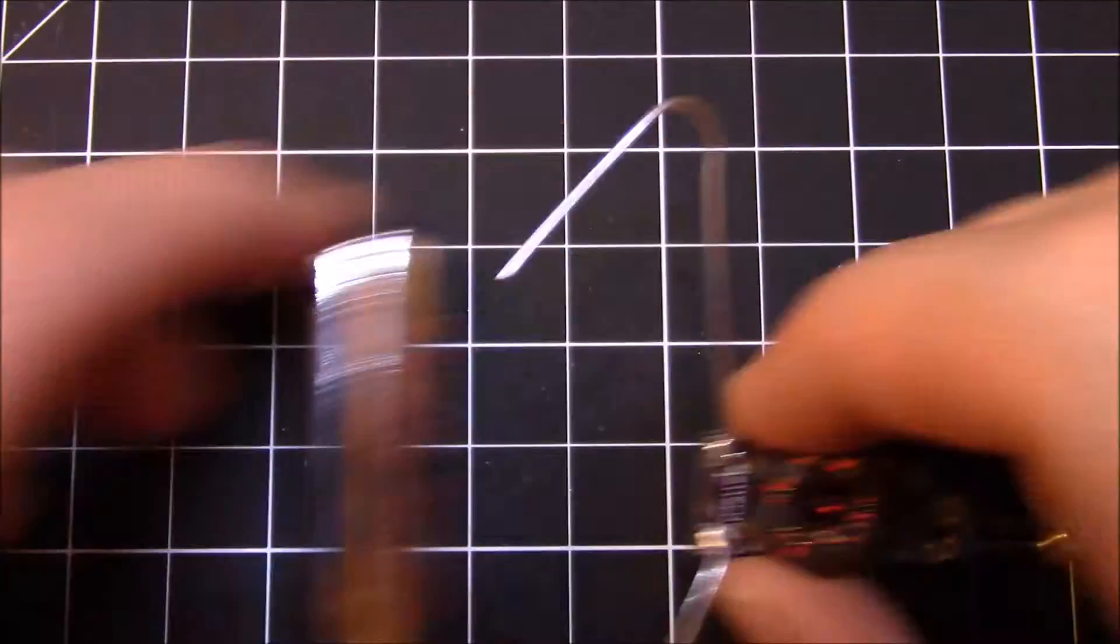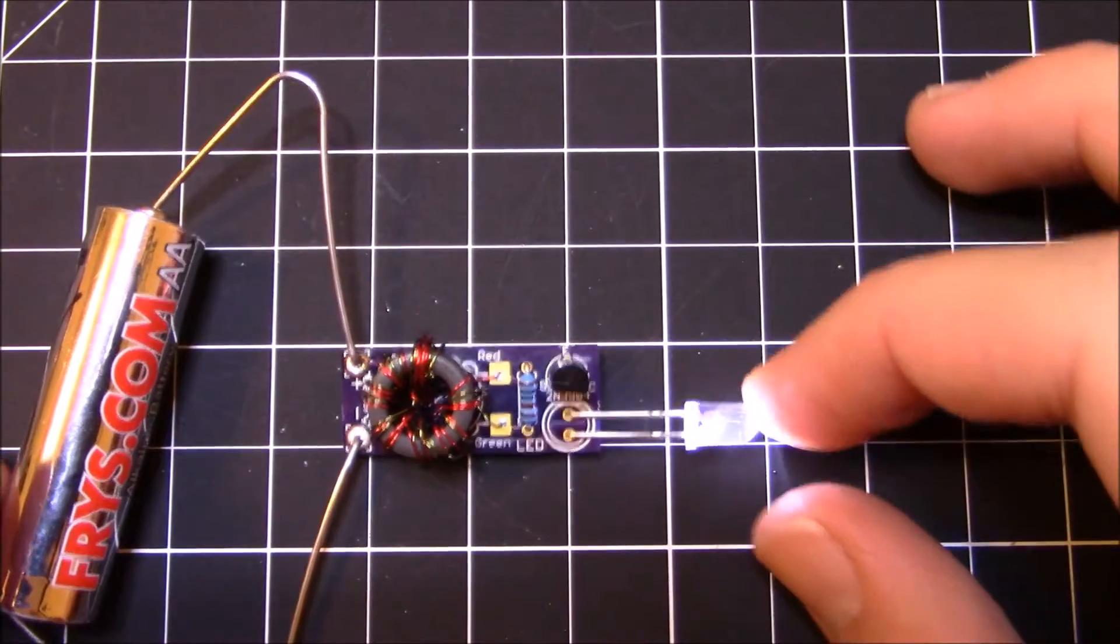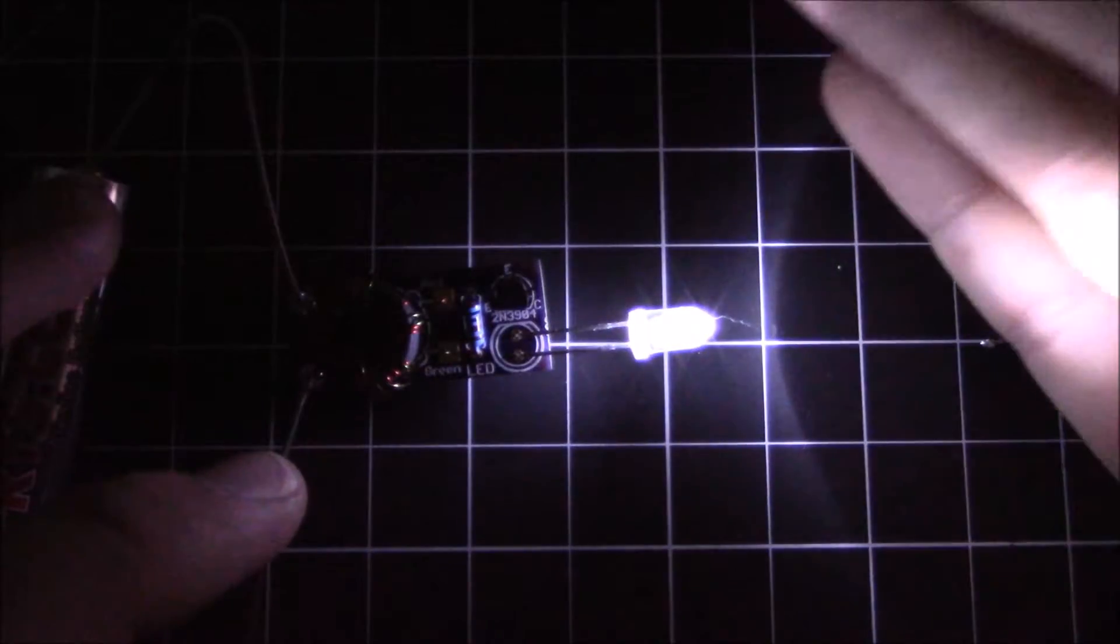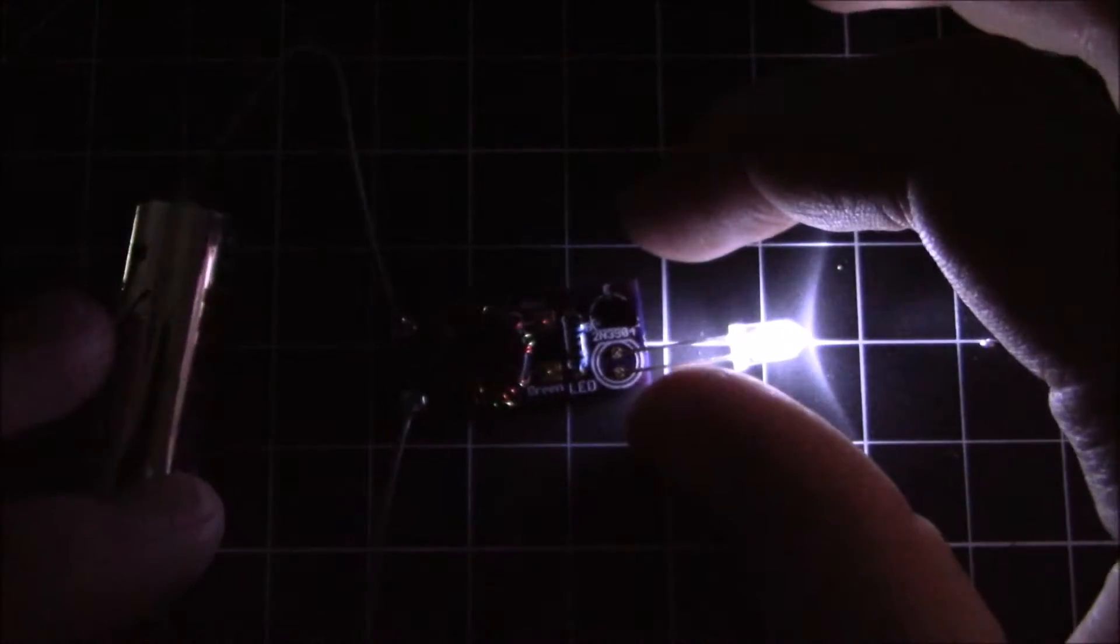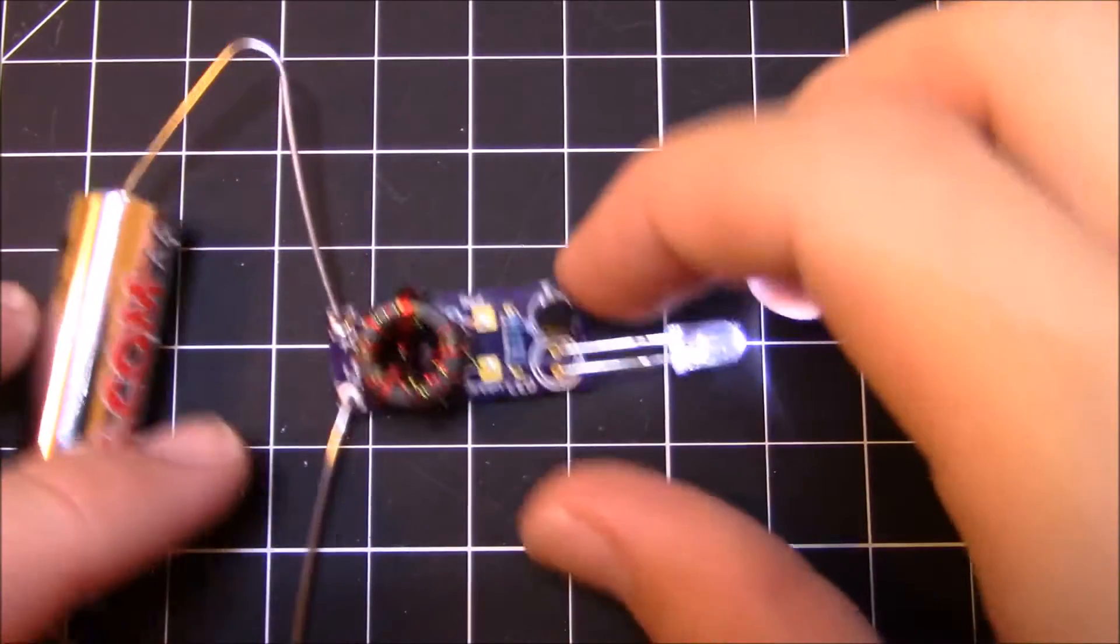However, it still lights up the LED when connected to the Jewel Thief kit. So if you have a bunch of dead batteries, you can turn them into night lights and just drain the last bit of energy out of the batteries before you throw them away or recycle them.